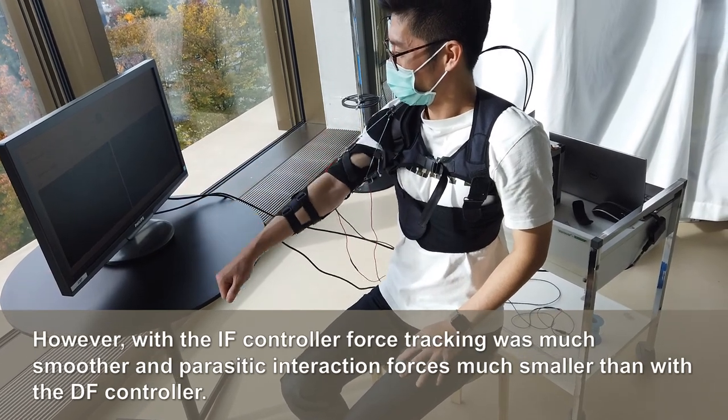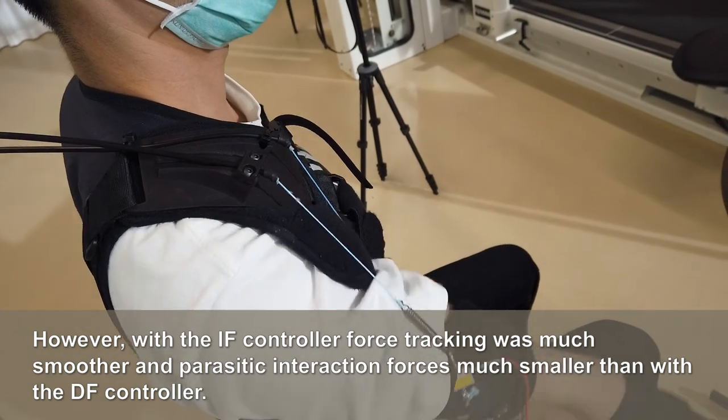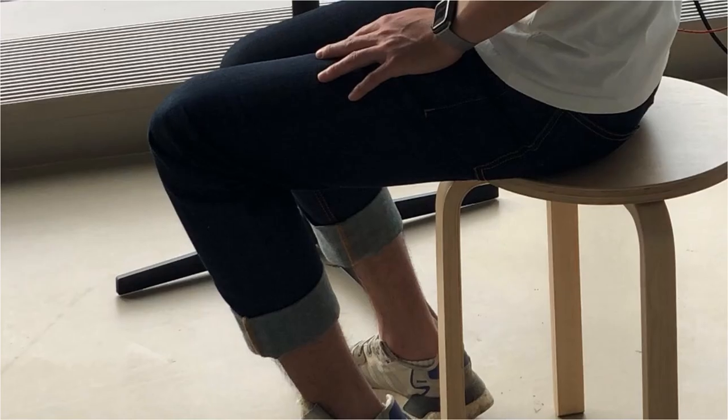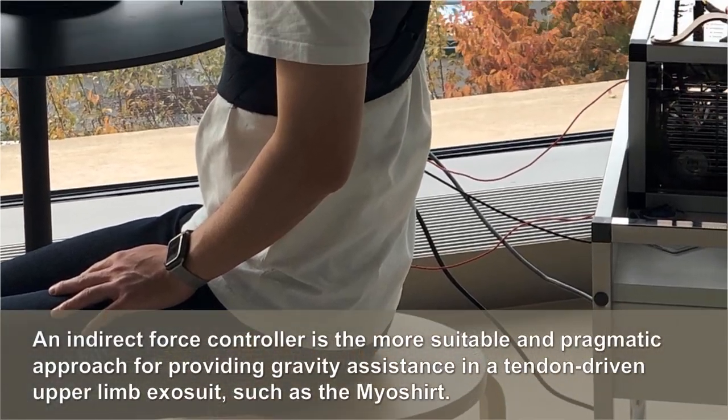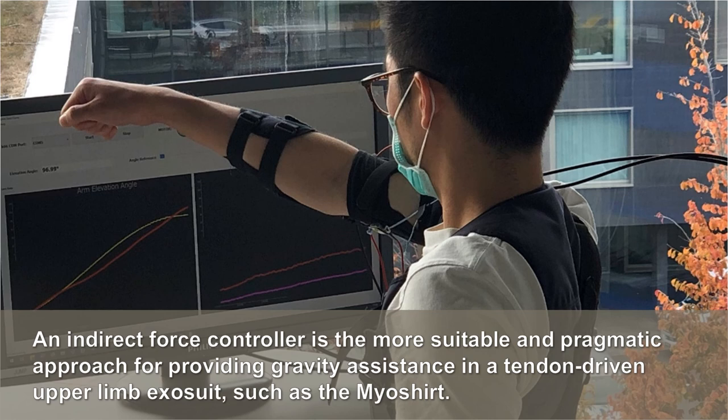However, with the indirect force controller, force tracking was much smoother and parasitic interaction forces much smaller than with the direct force controller. In conclusion, an indirect force controller is the more suitable and pragmatic approach for providing gravity assistance in a tendon-driven upper limb exosuit, such as the Myoshirt.